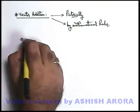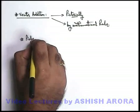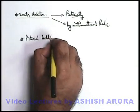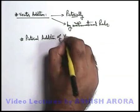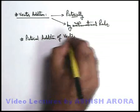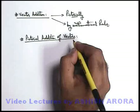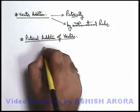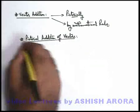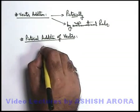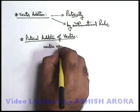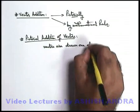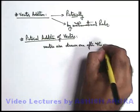Let's look at pictorial addition of two vectors. Pictorially, vectors can be added when these are drawn one after another. In simple language, vectors are drawn one after the other.